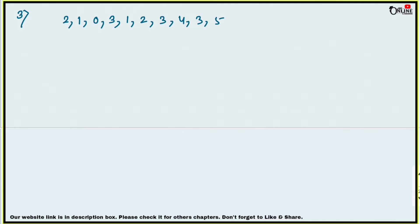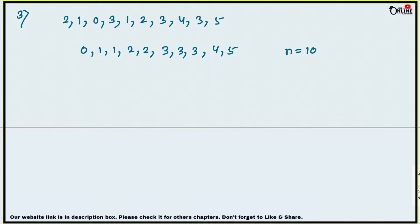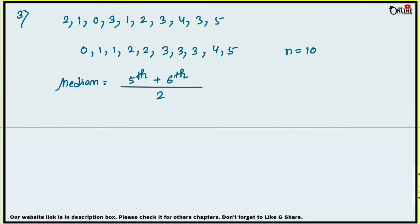First write the numbers in ascending order: 0, 1, 1, 2, 2, 3, 3, 3, 4, 5. Here n equal to 10, which is even. The median formula is the average of the (n/2)th and (n/2 + 1)th terms, i.e., the 5th and 6th terms. The 5th term is 2 and the 6th term is 3. So median = (2 + 3) / 2 = 5/2 = 2.5.